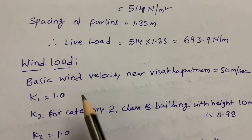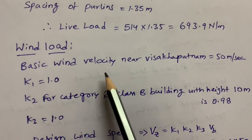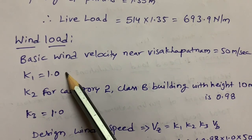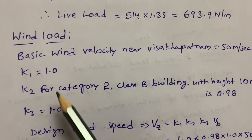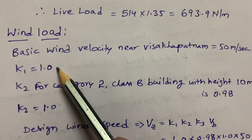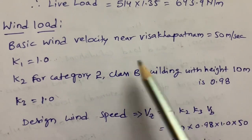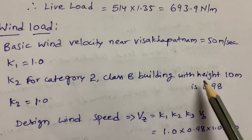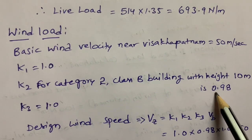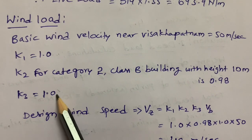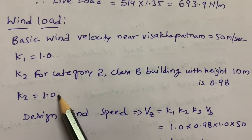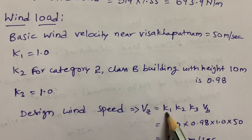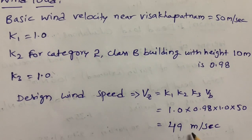For wind load as per IS 875, the basic wind velocity near Visakhapatnam is 50 meters per second. The risk coefficient k1 = 1, terrain and height factor k2 = 0.98 (Category 2, Class B building, height 10 meters as per table), and topography factor k3 = 1 for the Visakhapatnam area. Design wind speed Vz = k1 × k2 × k3 × Vb = 49 meters per second.